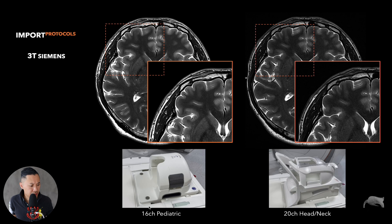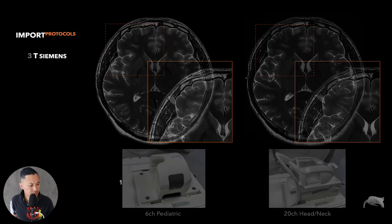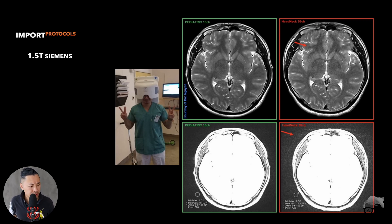He was using a pediatric 16-channel coil combined with a 20-channel head-neck coil. The pediatric coil is meant for children up to 18 months — it's a very dedicated coil, and it does actually fit my head. Knowing specifically which coil he was using is important. This was done on 1.5 Tesla, back in 2018. You can see that on the 20-channel coil there is more noise in the same sequence with the same parameters, because the pediatric coil sits much closer to the head and provides more SNR.